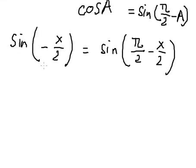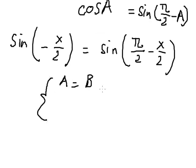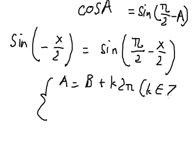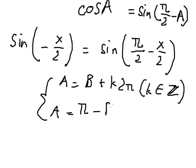And this one we change by sine of (π over 2 minus S over 2). In this situation, we have the general solution formula: capital A equals to B plus Kπ, where K belongs to integers. And the second case: A equals to π minus B plus Kπ.